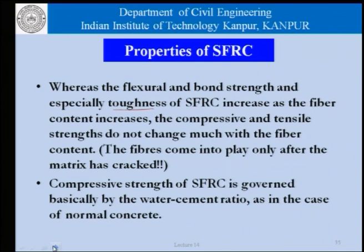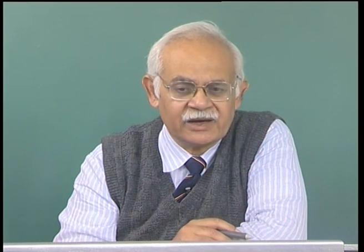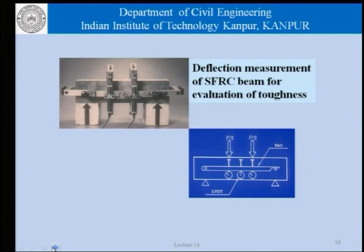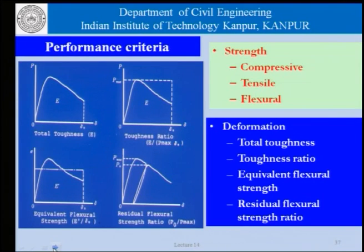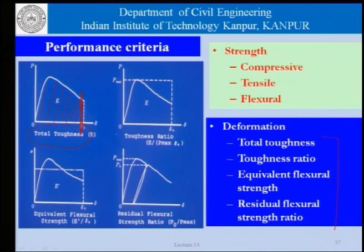The compressive strength — the maximum load carrying capacity governed by water-cement ratio — does not really change even if the concrete is reinforced with short fibers. This picture shows the deflection measurement of steel fiber reinforced beams for the evaluation of toughness. Performance criteria include: total toughness, toughness ratio, equivalent flexural strength, and residual flexural strength ratio. Total toughness refers to the area under the load-deformation curve measured up to a certain level of deflection.